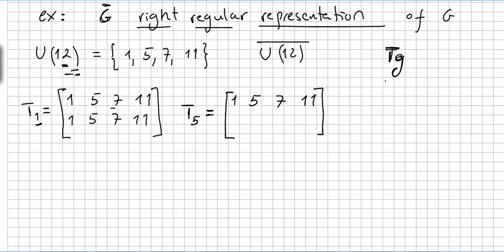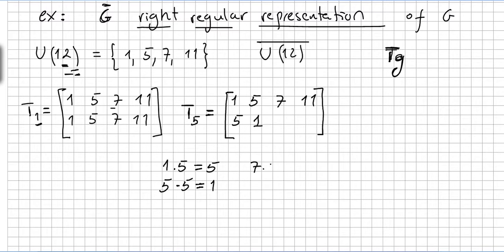Do not forget that this is right multiplication. Please watch the previous video before this one. So 1 times 5 equals 5. 5 times 5 equals 25, but modulo 12 that's 1. 7 times 5 equals 35, modulo 12 this is 11. And 11 times 5 equals 55, but modulo 12 that's 7. So this will be the second permutation.